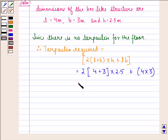That is equal to 2 × 7 × 2.5 + 12, that is equal to 35 + 12, and that equals 47 square meters.